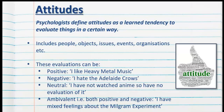Psychologists define attitudes as a learned tendency to evaluate things in a certain way. We have attitudes to everything, which includes people, objects, issues, events, organisations and so on. These evaluations can be positive — for example, I like heavy metal music. They can be negative — I hate the Adelaide Crows. They can be neutral — I have not watched anime, so I have no evaluation of it. Or they can be ambivalent, seeing both positive and negative viewpoints — so I have mixed feelings about the Milgram experiment.